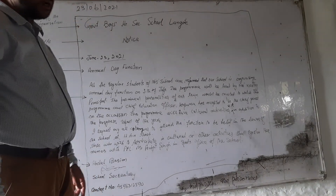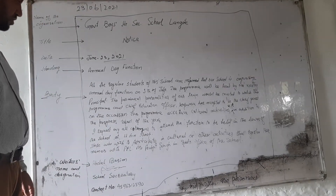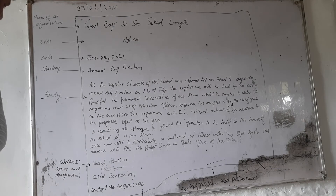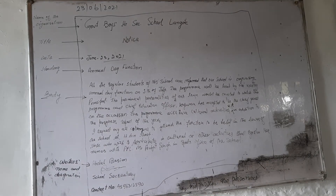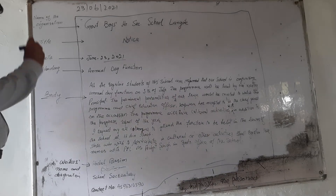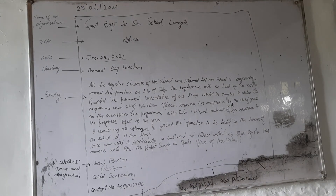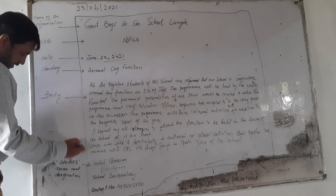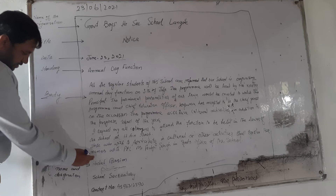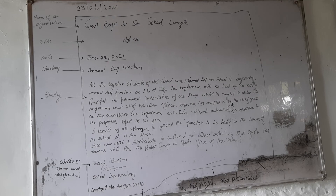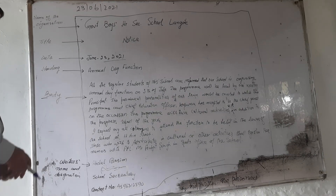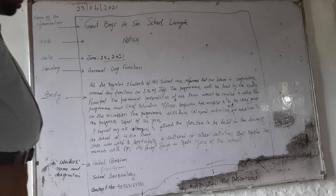Those who are interested in participating in the program will have to register their names. After the body, the important thing is the writer's name along with their designation — this authenticates the notice. Then the writer's name, signature, and designation are provided. The contact number is also normally included. This is question number three of the question paper, and it also deals with poster design and advertisement writing, which we will be doing tomorrow. Thank you.